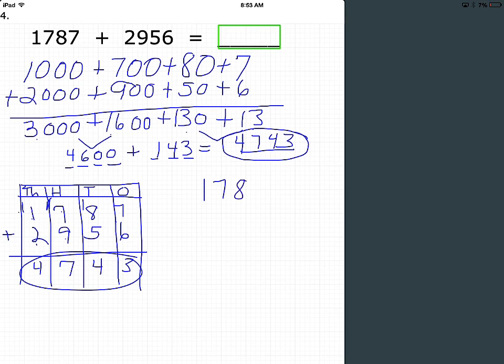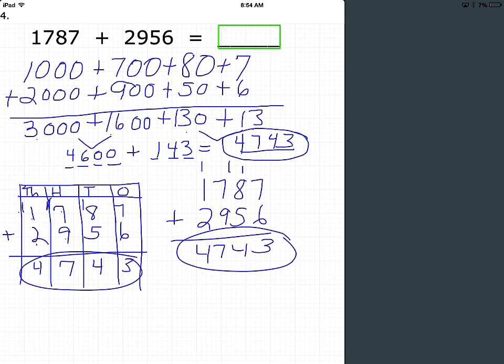This last strategy looks like this without place value boxes. Whatever strategy you use, the answer to the problem is 4743.